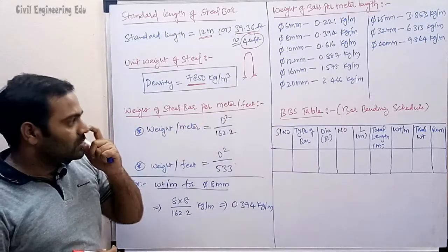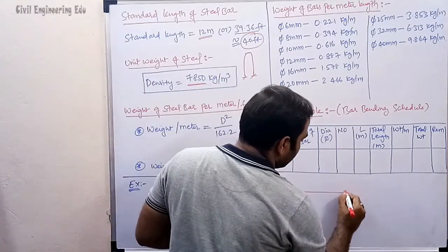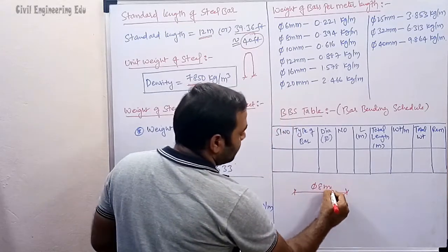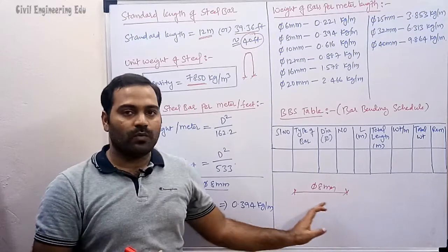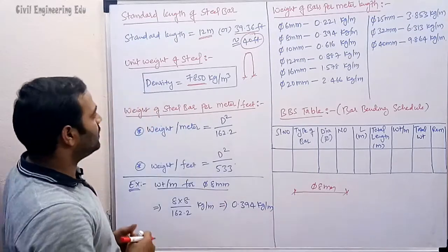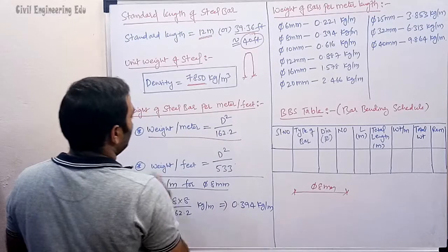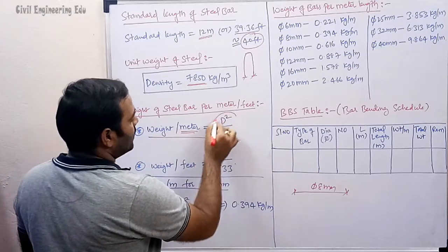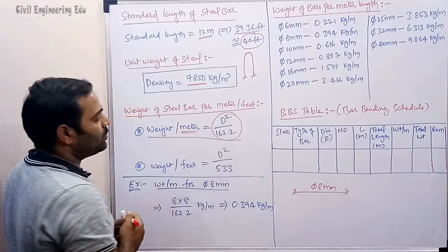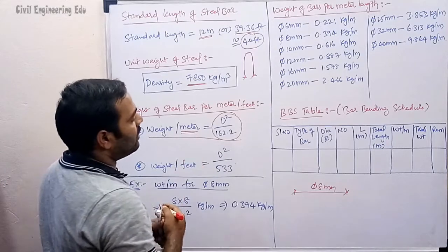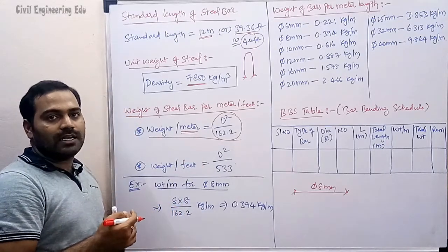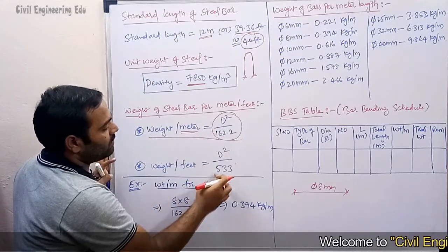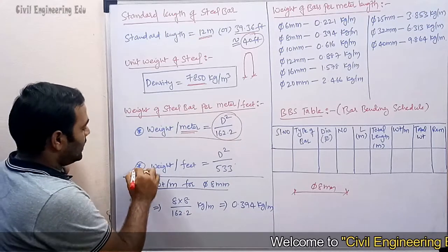To calculate the weight of a steel bar per meter length, we use the formula: D² / 162.2, where D is the diameter in mm. This gives the weight in kg per meter. A separate video explaining the derivation of this formula is linked in the description. For weight per feet length, the formula is D² / 533.